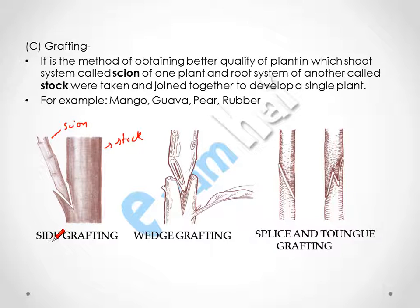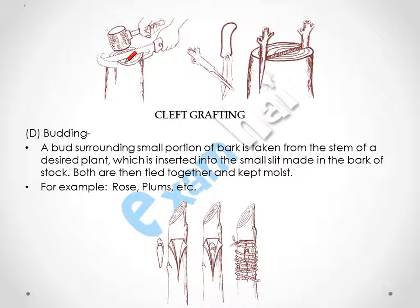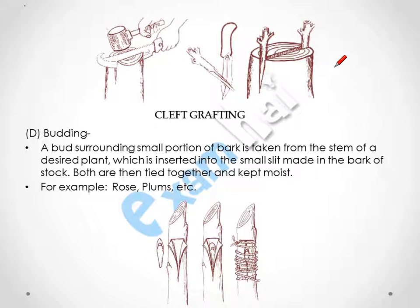Grafting has several types: side grafting, wedge grafting — named because it has the shape of a wedge — splice and tongue grafting, and cleft grafting, where a cut is made and two stems are joined together to grow as a single plant.